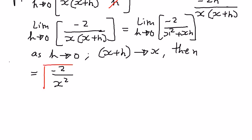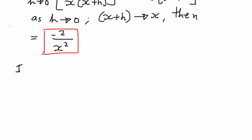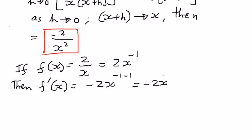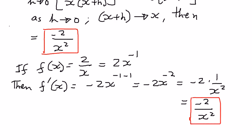Therefore, this is where we want to leave it. This is the first derivative of the given function. We can also write this as follows: if the given function is 2 over x, or equivalently 2 times x to the power of negative 1, then the first derivative is going to be equal to negative 2 times x to the power of negative 1 minus 1, which gives negative 2x to the power of negative 2, or written with a positive exponent, negative 2 times 1 over x squared, which is the same as negative 2 over x squared — exactly what we arrived at using limits.